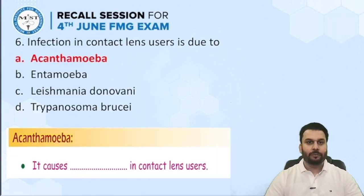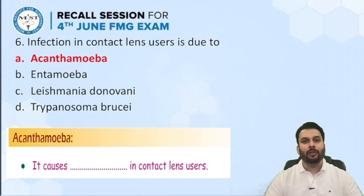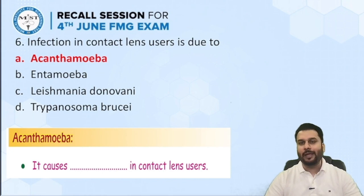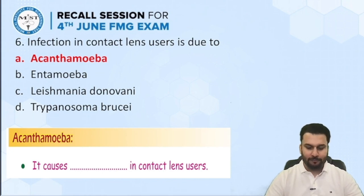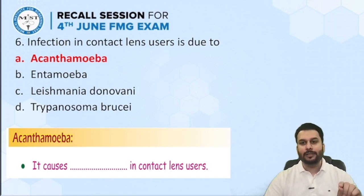Next question: infection in contact lens users is due to which organism? This is a parasitic infection seen in contact lens users, and the answer is very straightforward — Acanthamoeba. From the notes you can also see: Acanthamoeba causes keratitis in contact lens users.